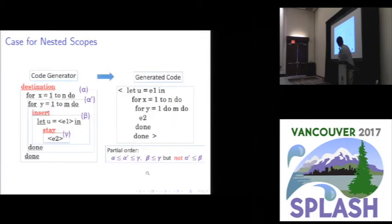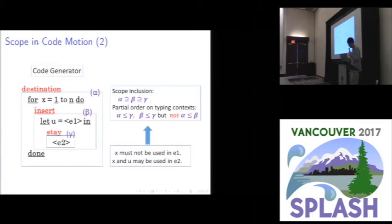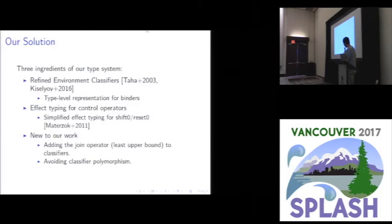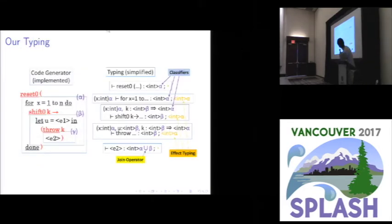So anyway, our task is to attach appropriate types to these control operators to achieve type safety. So for example, our goal is to ensure this kind of conditions are always satisfied if the source code type checks. And our idea, so actually we don't have to discover new ideas. Only very small ideas are sufficient to achieve our goal. We just followed previous two works about refined environment classifiers and the effect typing for control operators. And what is really new to our work is to add some join operator for scope binders, which will be explained.